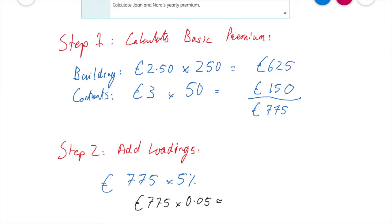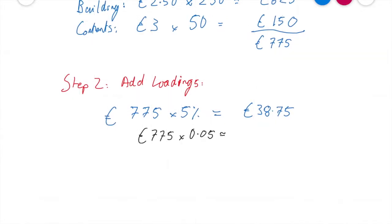So you might like to use your calculator, percentage put in your calculator. Whatever works for you, works for you. So my answer there then is going to be, when you work that out, £38.75. So that's the extra bit I'm going to have to pay.